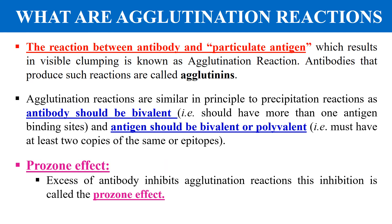There is another term known as the prozone effect. Whenever there is an excess of antibody, there will be no agglutination. The excess of antibody inhibits the agglutination reaction, and this inhibition is called the prozone effect.